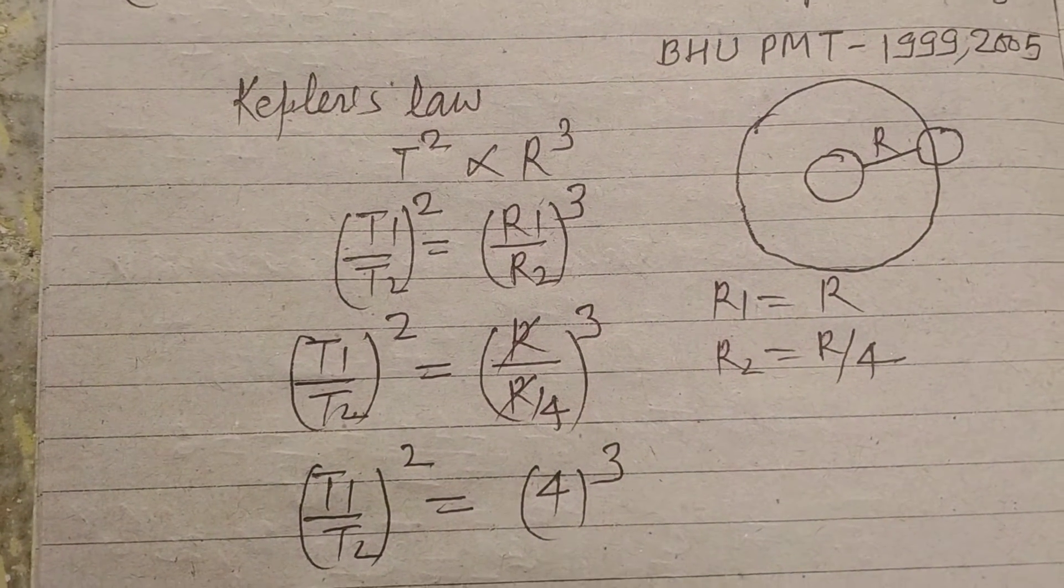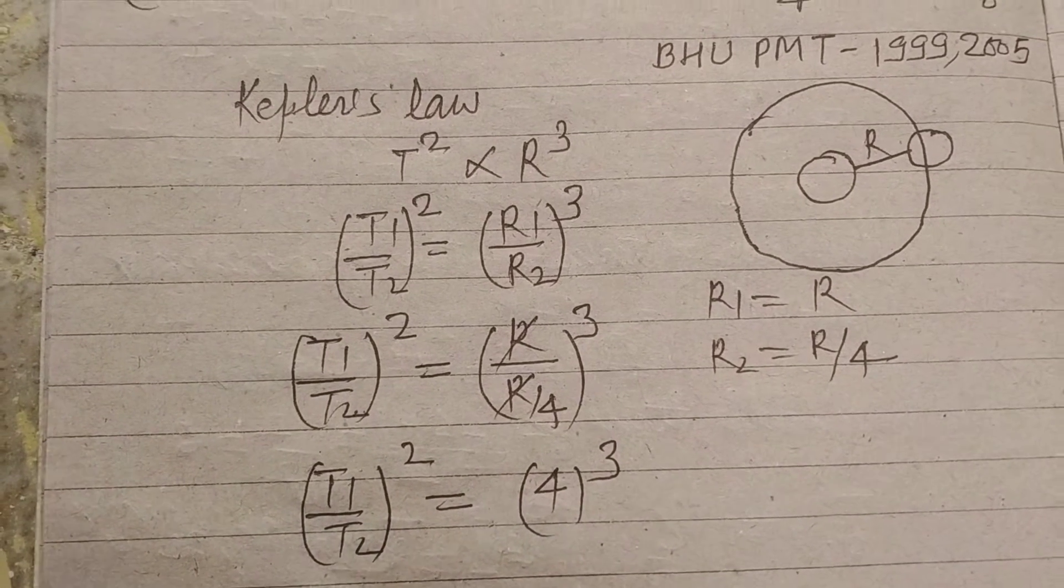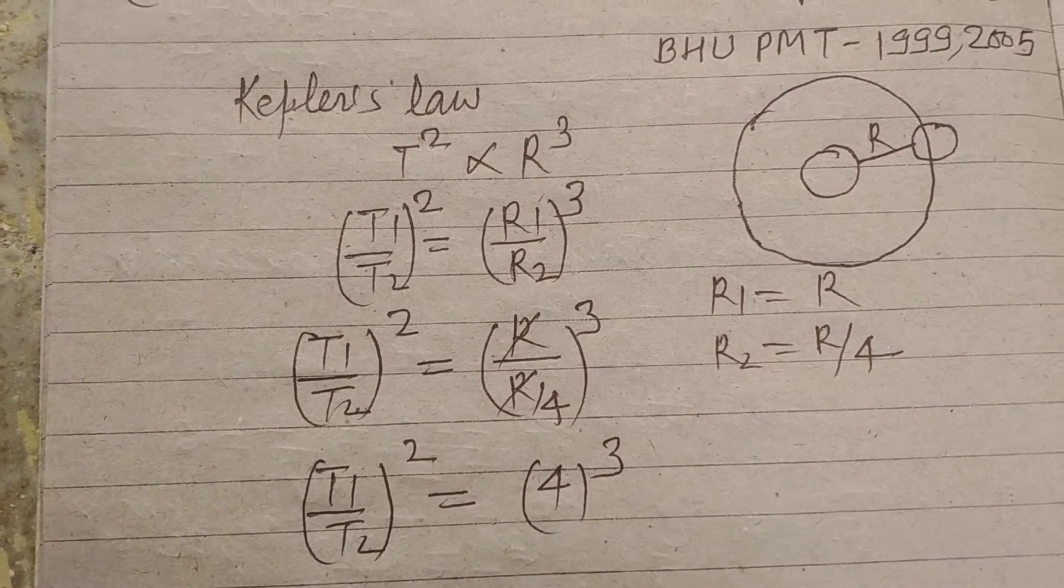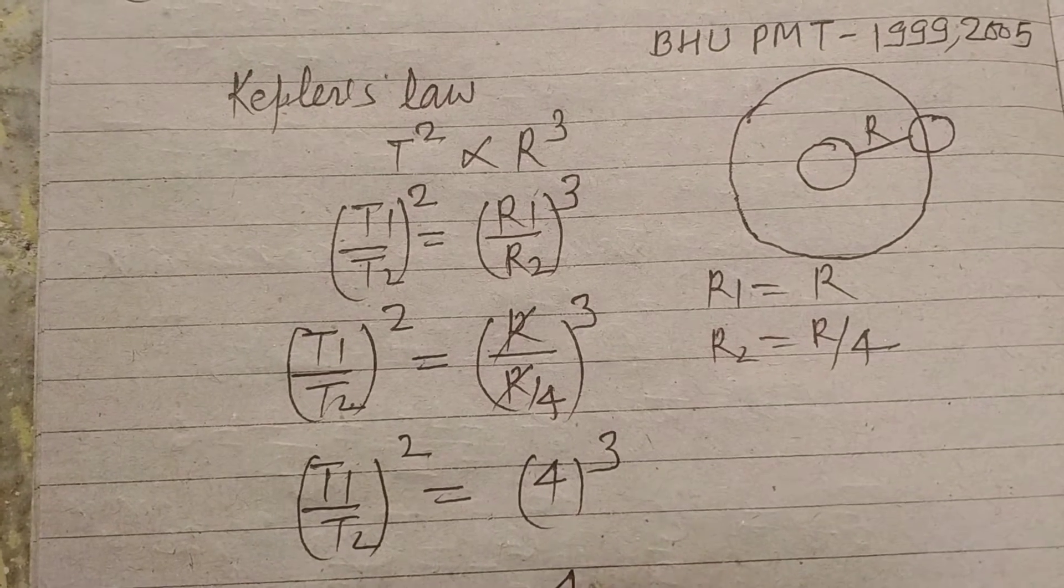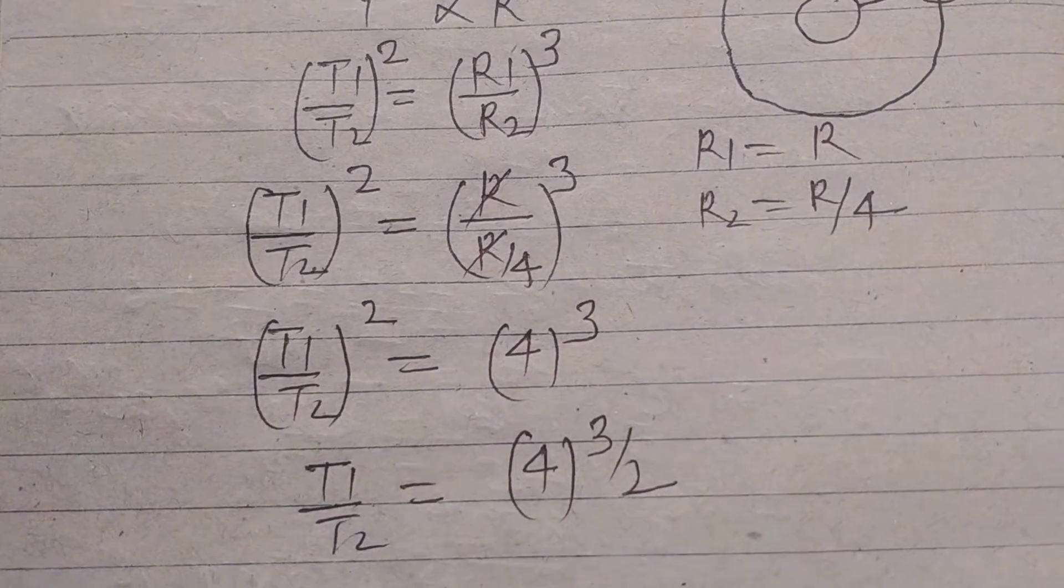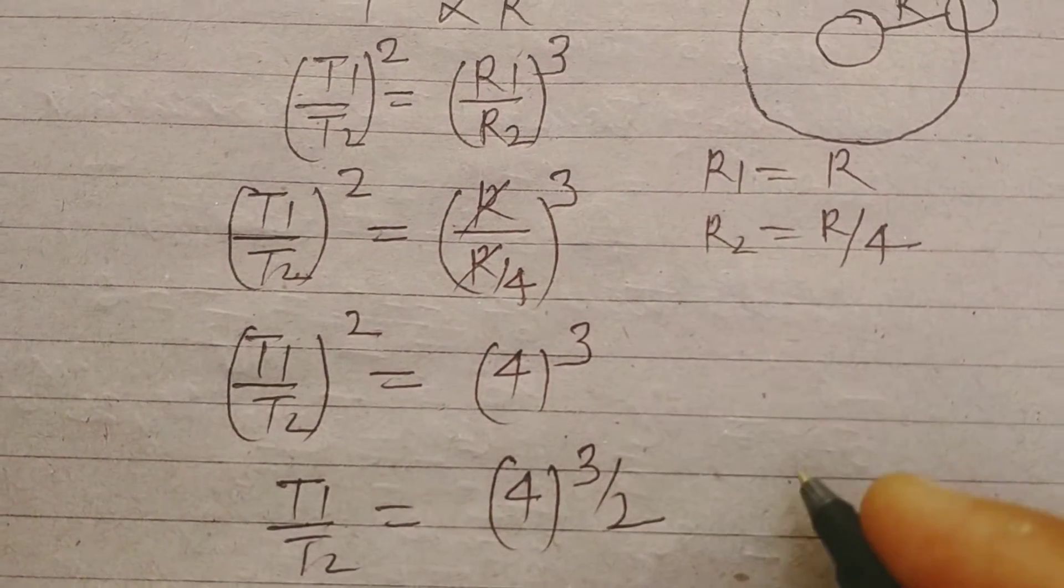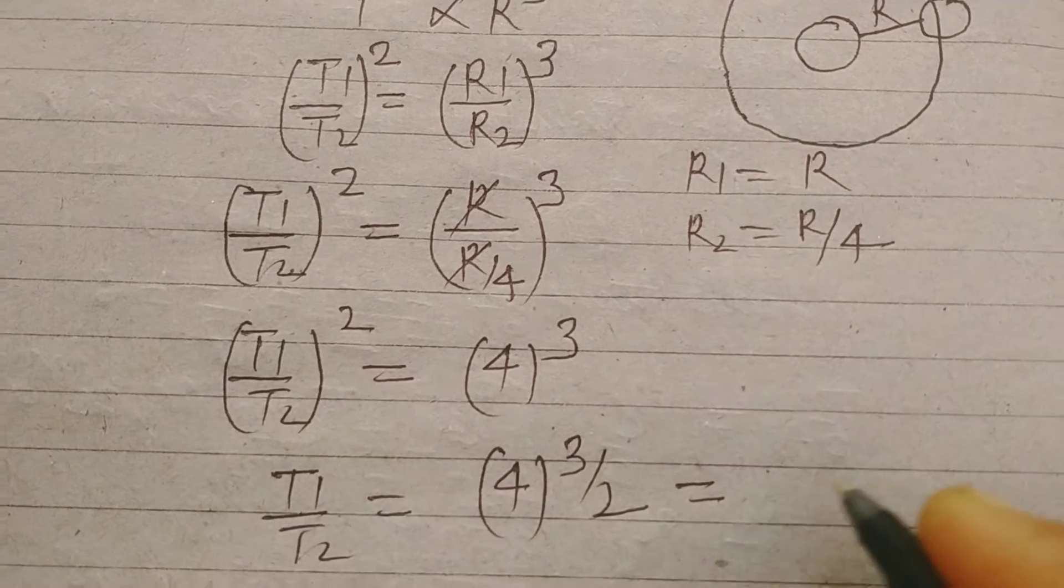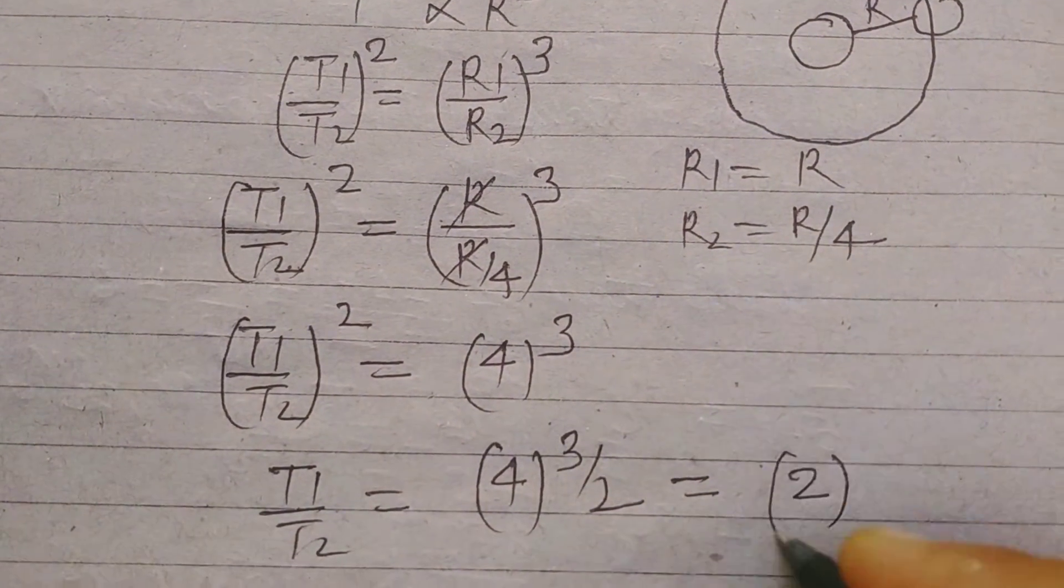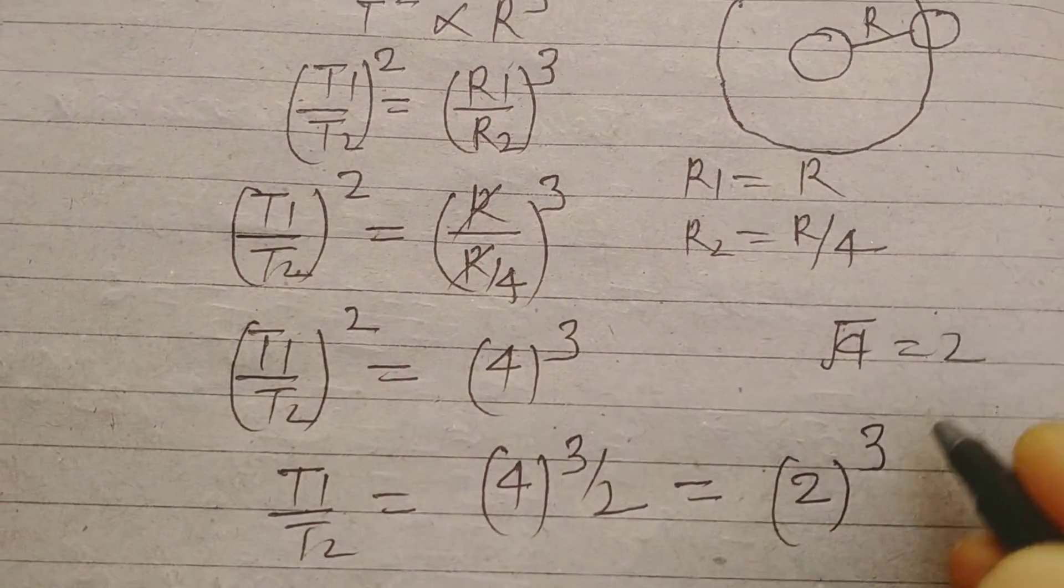Now we take square root. So T1 upon T2 equal to 4 to the power 3/2 by taking square root both sides. So this becomes 2 to the power 3 because square root of 4 is 2.